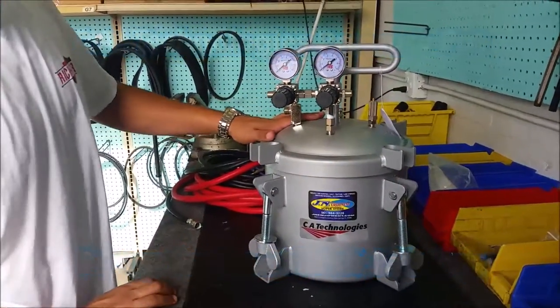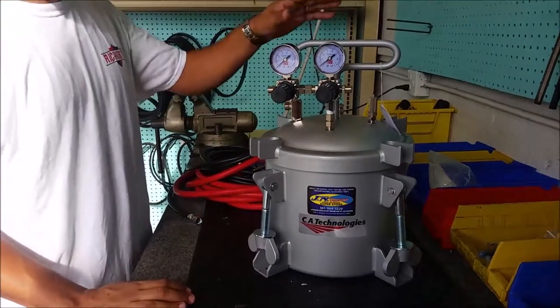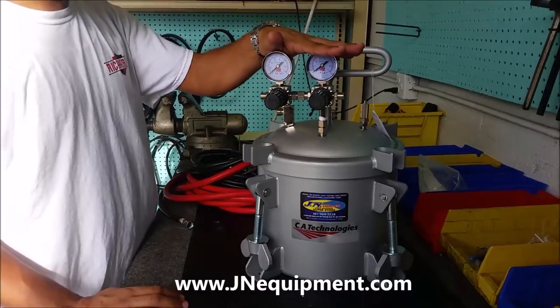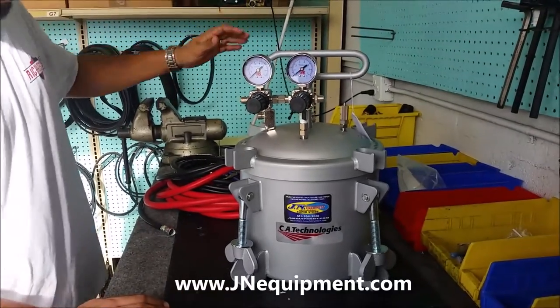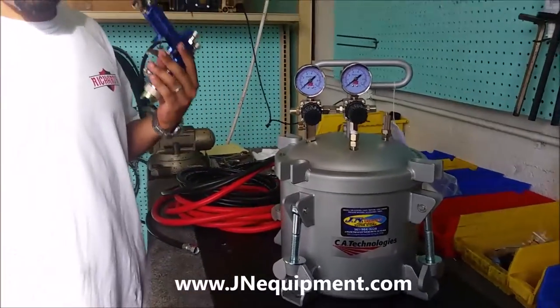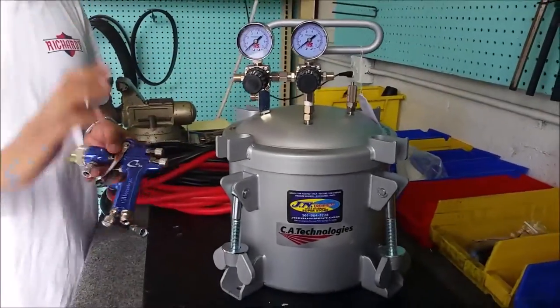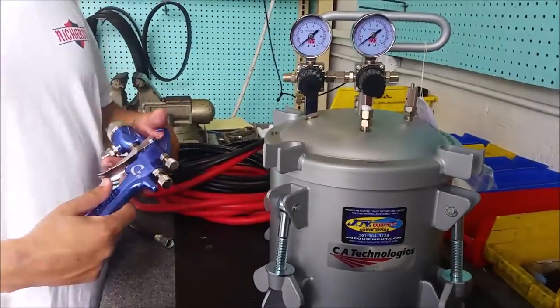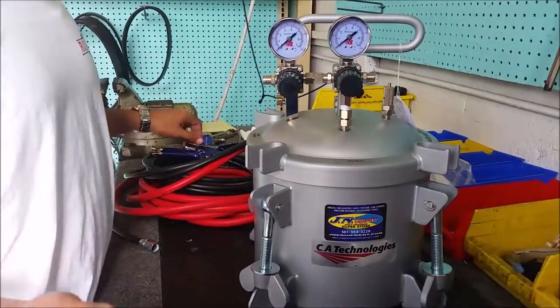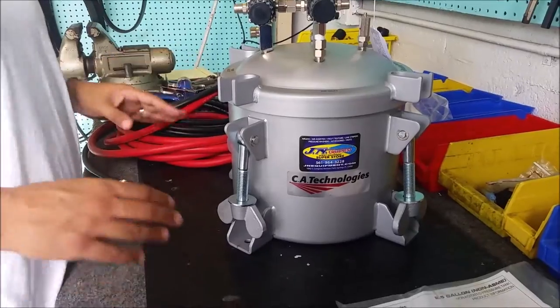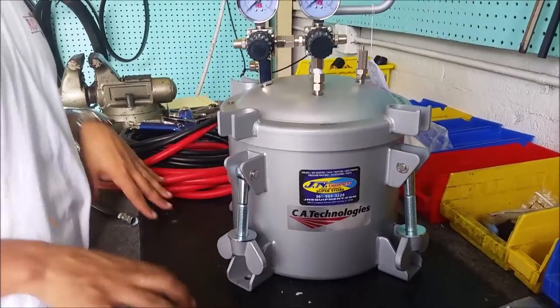Alright, today I'll be showing you guys how to set up a CA Technologies pressure pot. With this example I have a dual regulator setup and I'm just going to be going through the whole process of correctly setting up your pressure pot, your fluid and air pressure and how to get it set to your gun. It's all going to be pretty straightforward, hopefully help you guys out in case you're having some problems with spray patterns or how things are coming out, maybe refer to this video as a good starting point.